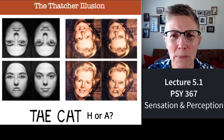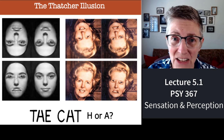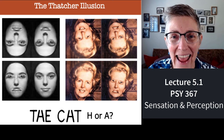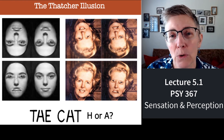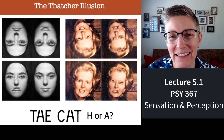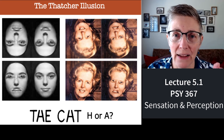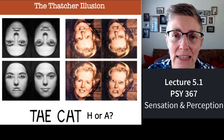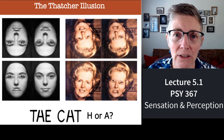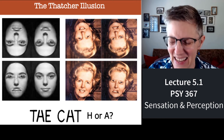How about the words 'the cat'? What I want you to see is that both the H in 'the' and the A in 'cat' are actually the same letter. But we interpret that figure as the letter H when it's surrounded by the letters T and E, and we perceive that same letter as an A when it's surrounded by C and T. Same figure, interpreted in two different ways right before your eyes. Perception — it's amazing.